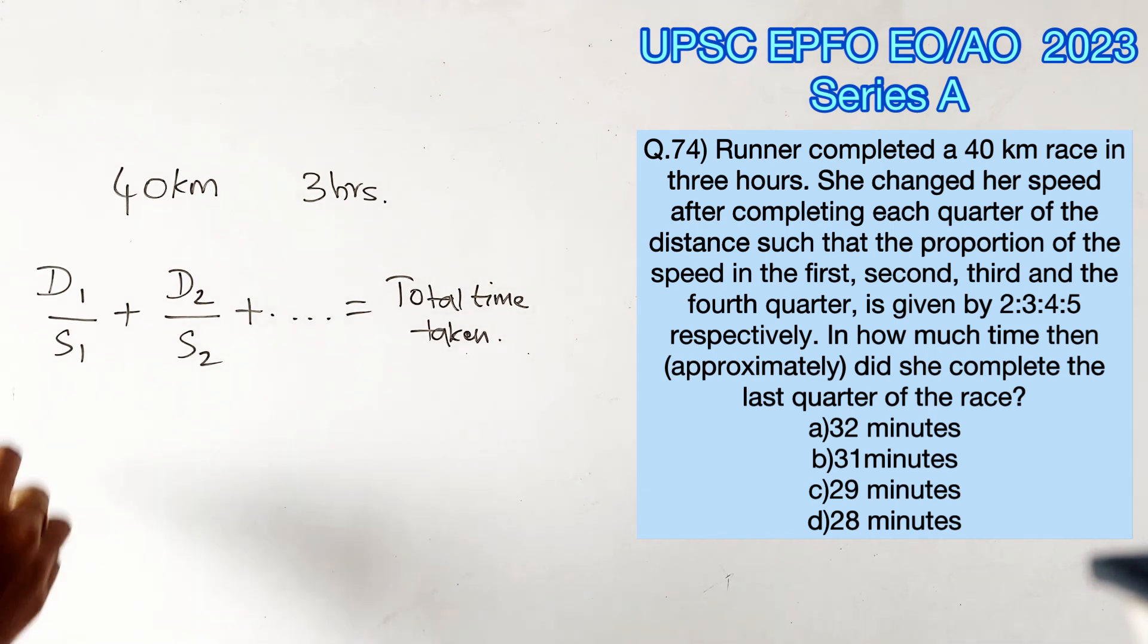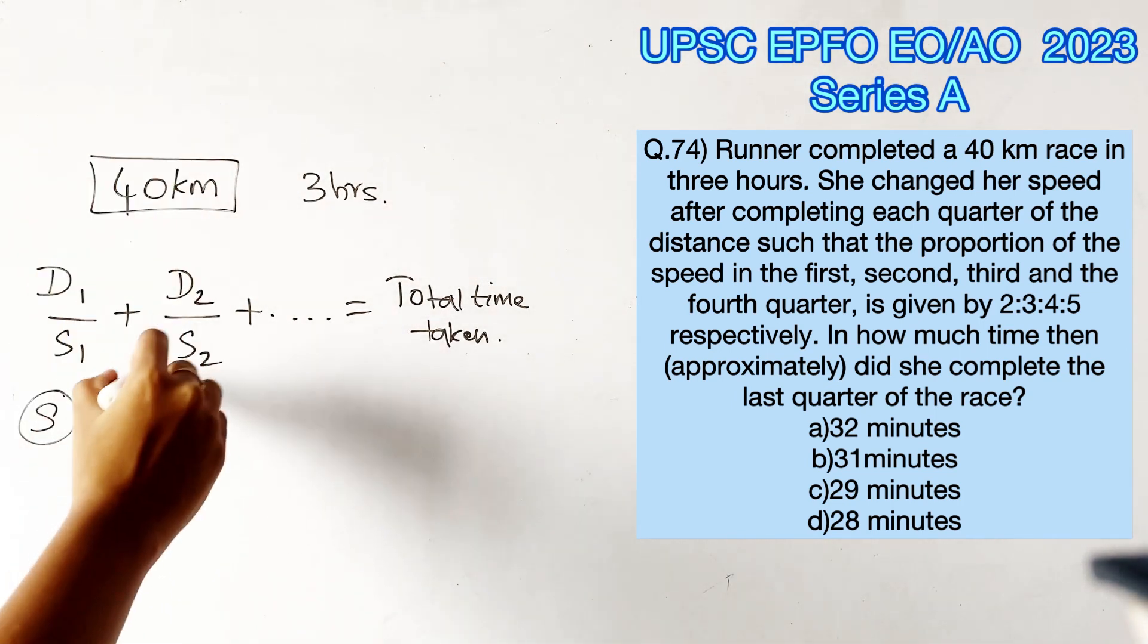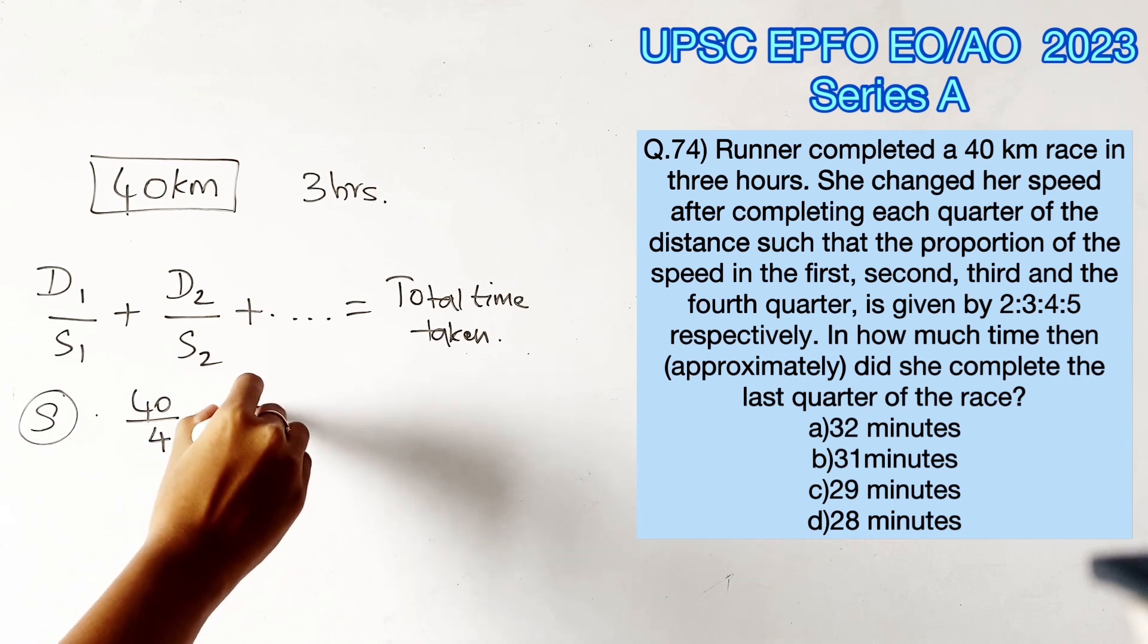Let's consider the speed as s. It is given that she has changed her speed in the proportion of 2s to 3s to 4s to 5s for every quarter of the distance. Out of the 40 kilometers, a quarter would be 40 by 4, that is 10 kilometers.